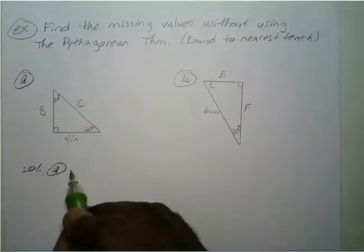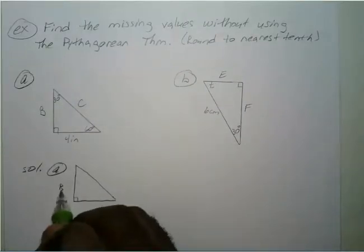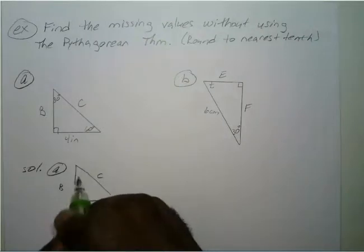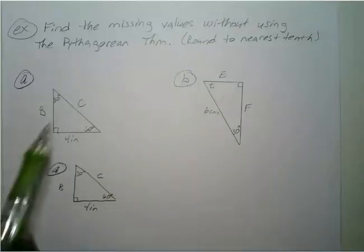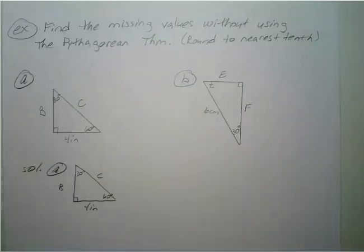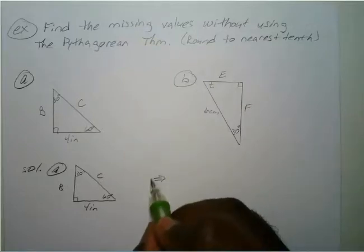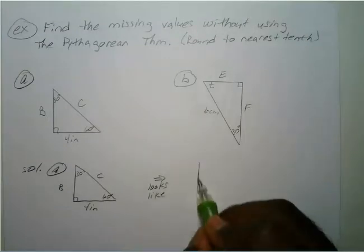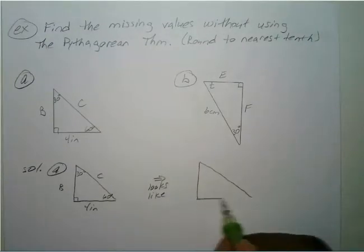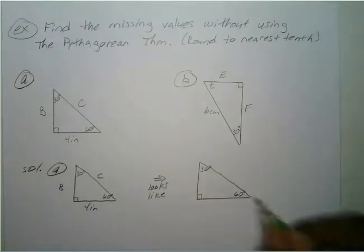I'm just going to do a quick sketch. You have sides B and C unknown, four inches on one side, 30 degrees and 60 degrees. It looks like our 30-60-90 special right triangle, which has sides 1, square root of 3, and 2. The only difference is this is 1 and the given side is 4.